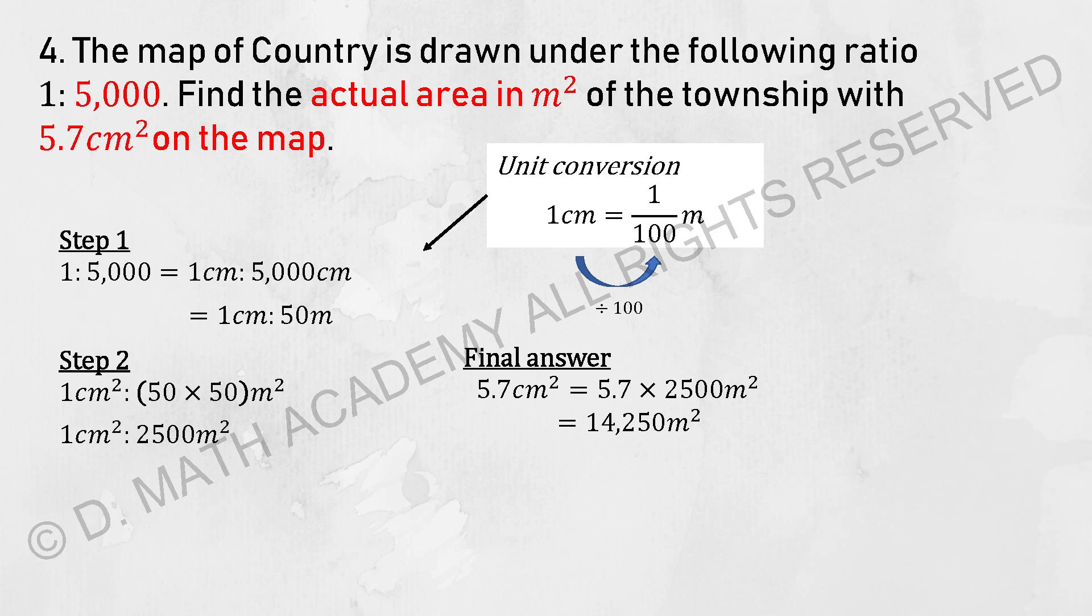Same thing: 1 to 5,000 is actually 1 cm to 5,000 cm. So 5,000 cm is equivalent to 50 meters. So 1 cm squared will be 2,500 meter squared. Take the 5.7 cm squared multiplied by 2,500. Then you should get the actual area as 14,250 meter squared.